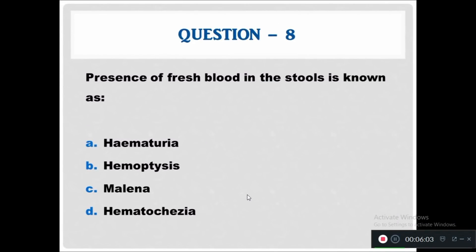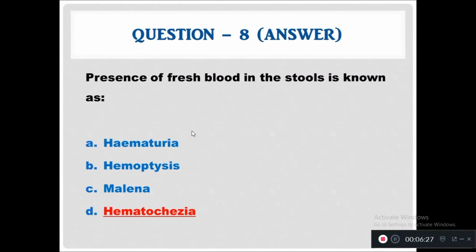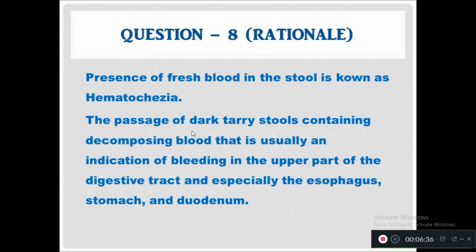Question 8: Presence of fresh blood in the stool is known as — Option A: hematuria. Option B: hemoptysis. Option C: melena. Option D: hematochezia. The answer is hematochezia. The rationale: presence of fresh blood in the stool is hematochezia. The passage of dark, tarry stools containing decomposed blood usually indicates bleeding in the upper digestive tract — bleeding from the stomach or duodenum is known as melena. Fresh blood in stool is hematochezia.